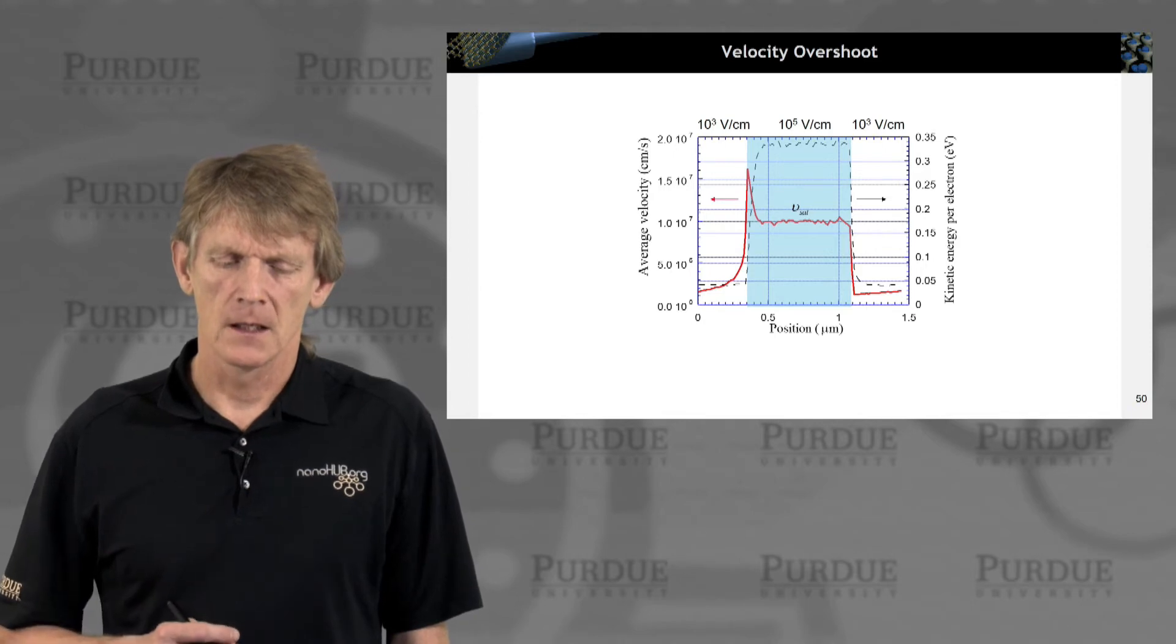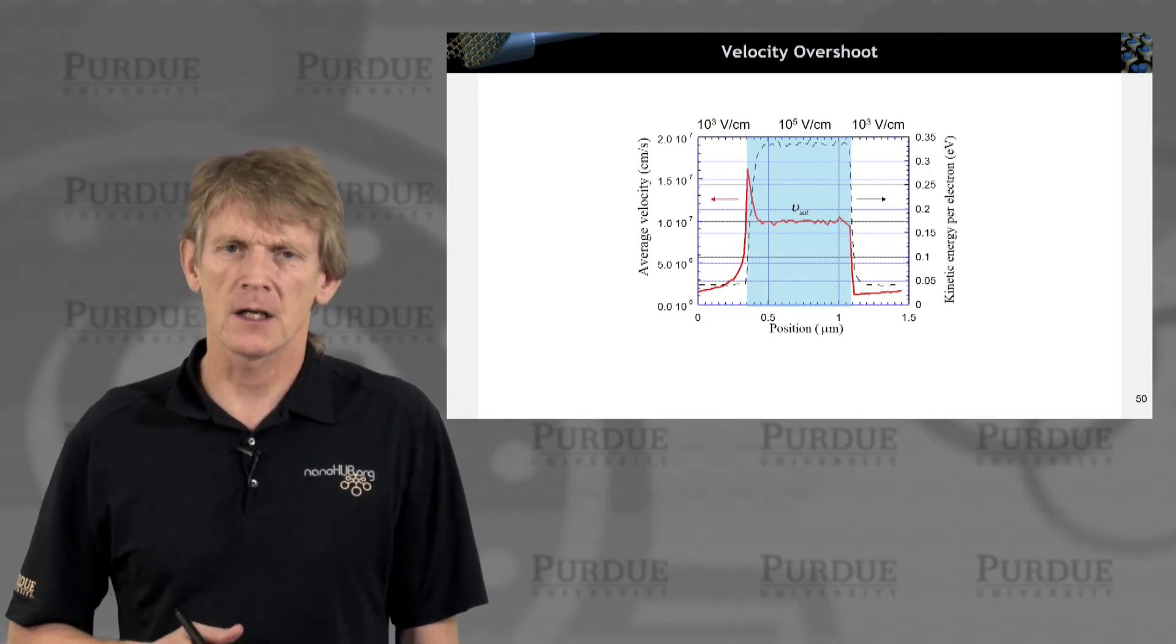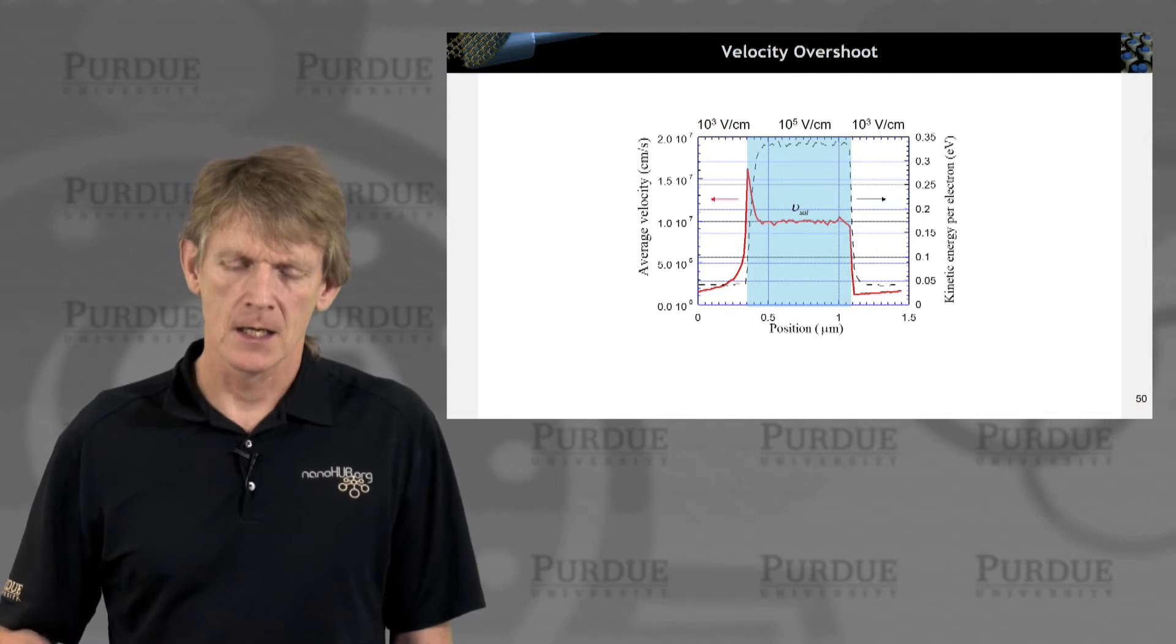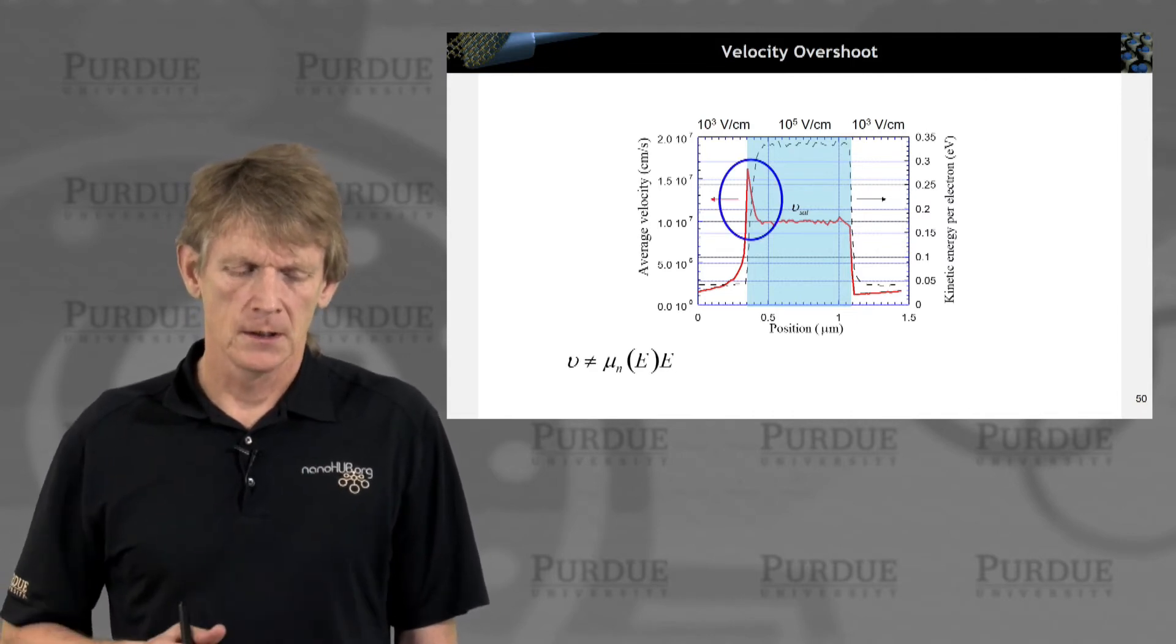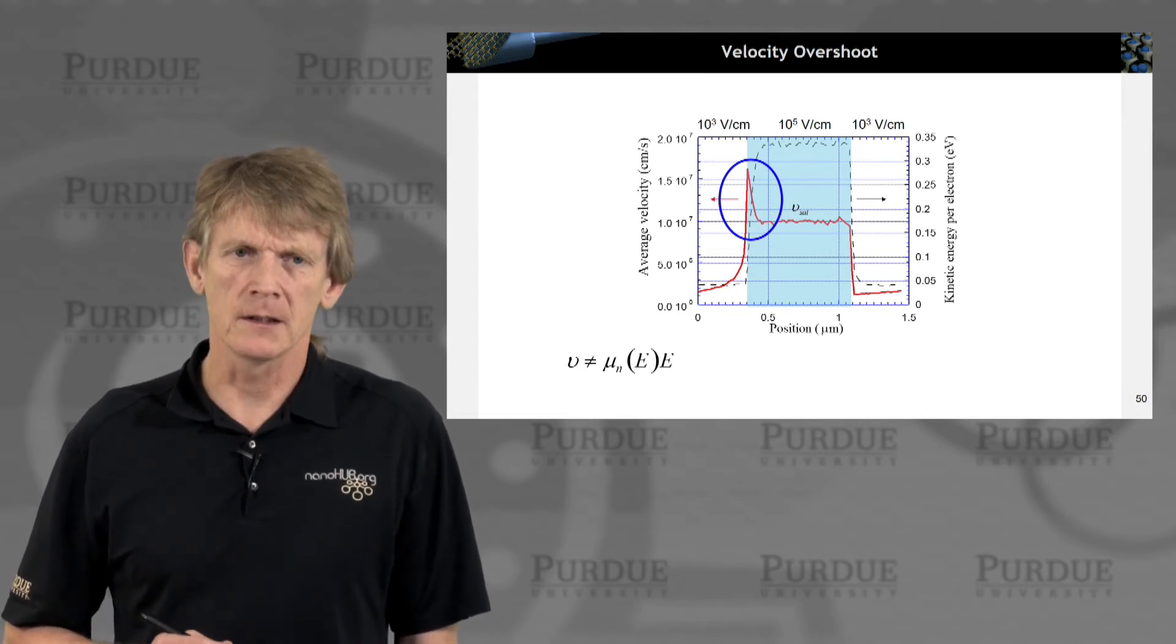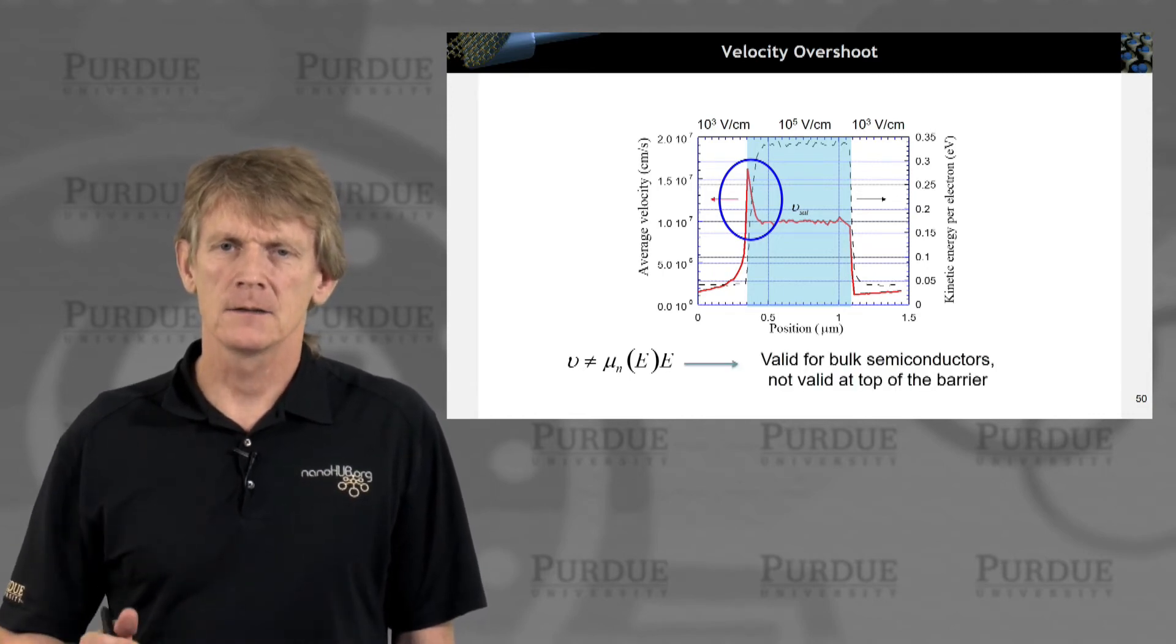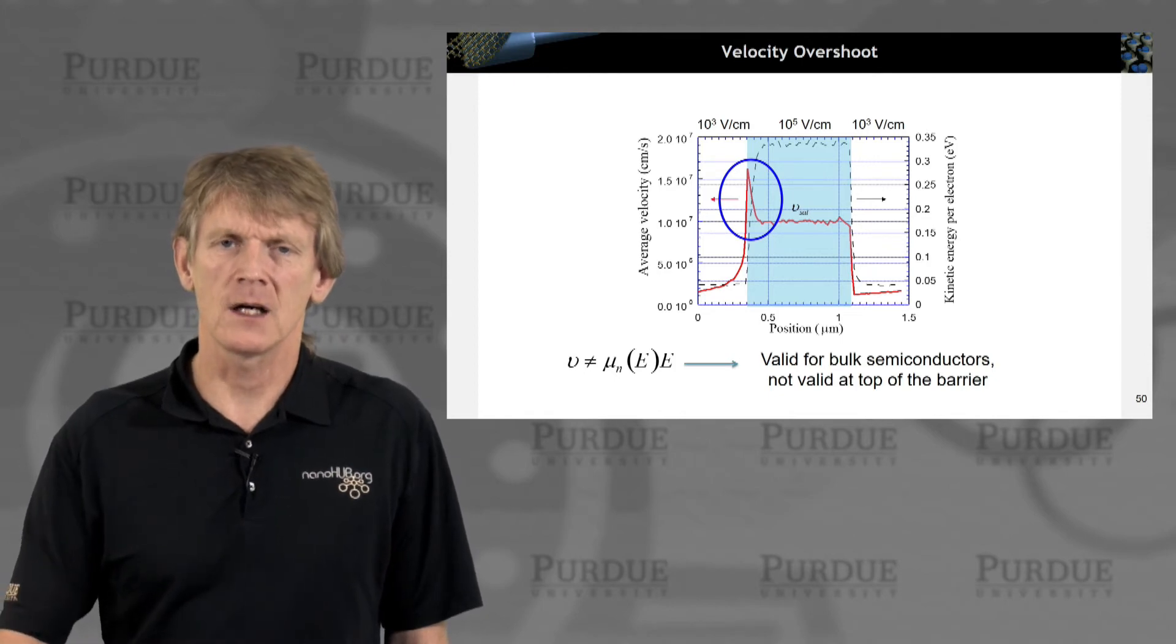So this is a velocity overshoot that had been a significant research effort when I was in grad school when the classical transport folks were studying this around the same time. So velocity is not just a simple function of mobility anymore. There are internal processes that you need to consider. And this is only true for bulk semiconductors, not at the top of the barrier.